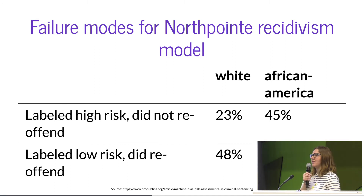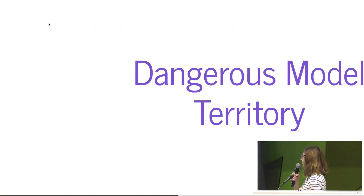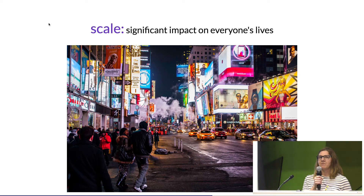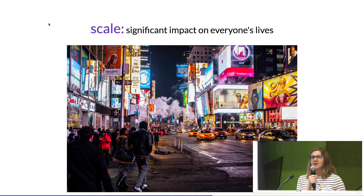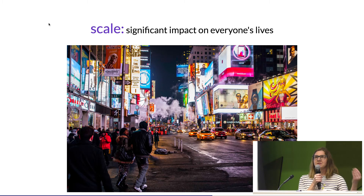There are ways to tell if your model seems shady. The first indicator is scale: does your model or algorithm have a significant impact on people's lives? If a recommendation system is deciding whether to send you blue or pink earrings, that's not a huge impact. But if you're deciding how long someone spends in jail, that's a big impact on someone's life, and you should be careful.